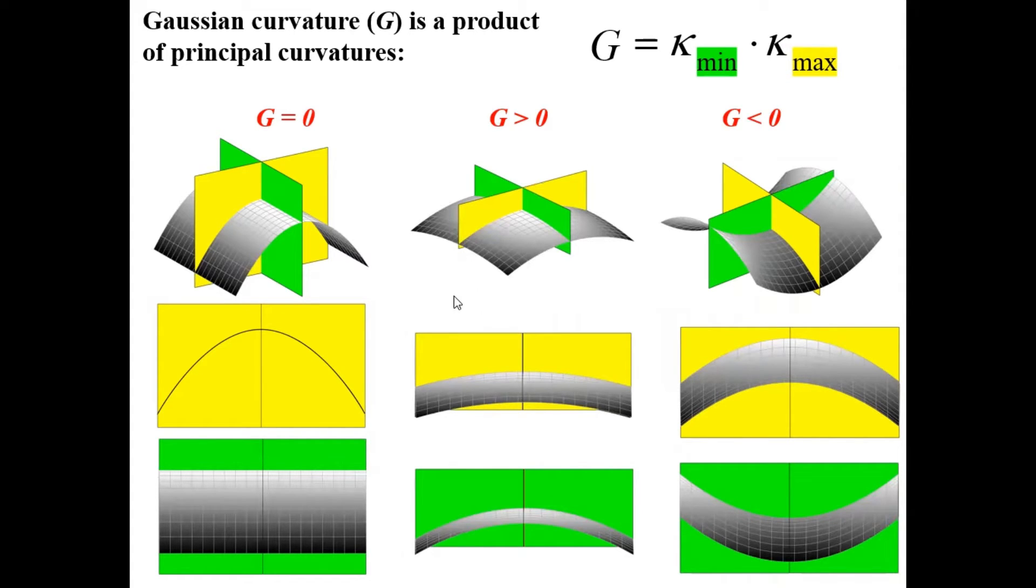If the surface is concave in both or convex in both the directions, then the Gaussian curvature is positive. While if the surface is concave in one and convex in another direction, then the Gaussian curvature is negative.